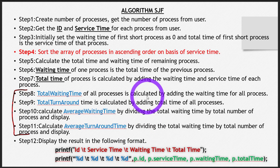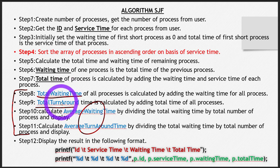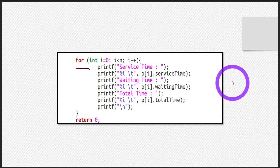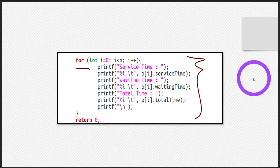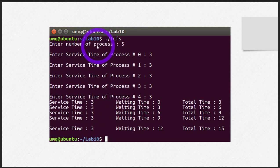I have missed some steps in this code intentionally because they were easy — specifically calculating the total waiting time, total turnaround time, and average waiting and turnaround time. You can easily do that by declaring an integer variable and adding all the waiting times and total times of all the processes. Let's now look at the output to verify the code calculated the correct times.